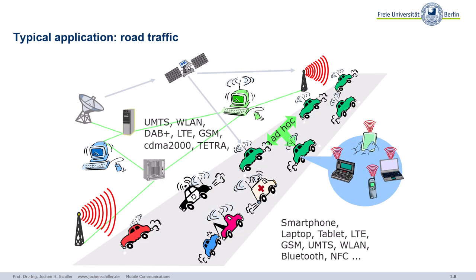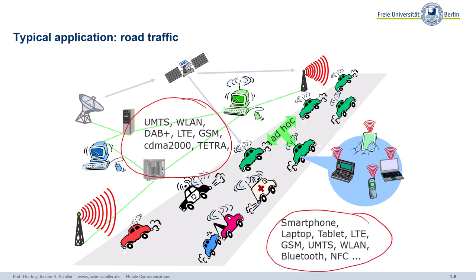Looking at a typical road traffic application, it's quite obvious you have many different wireless technologies. On the wide area side, systems like digital radio and LTE for communication with cars, for emergency situations, and for entertainment. Inside the car, you have many different technologies for authentication, near-field communication, Bluetooth, tablets and mobile phones, maybe even wireless LANs in trains.